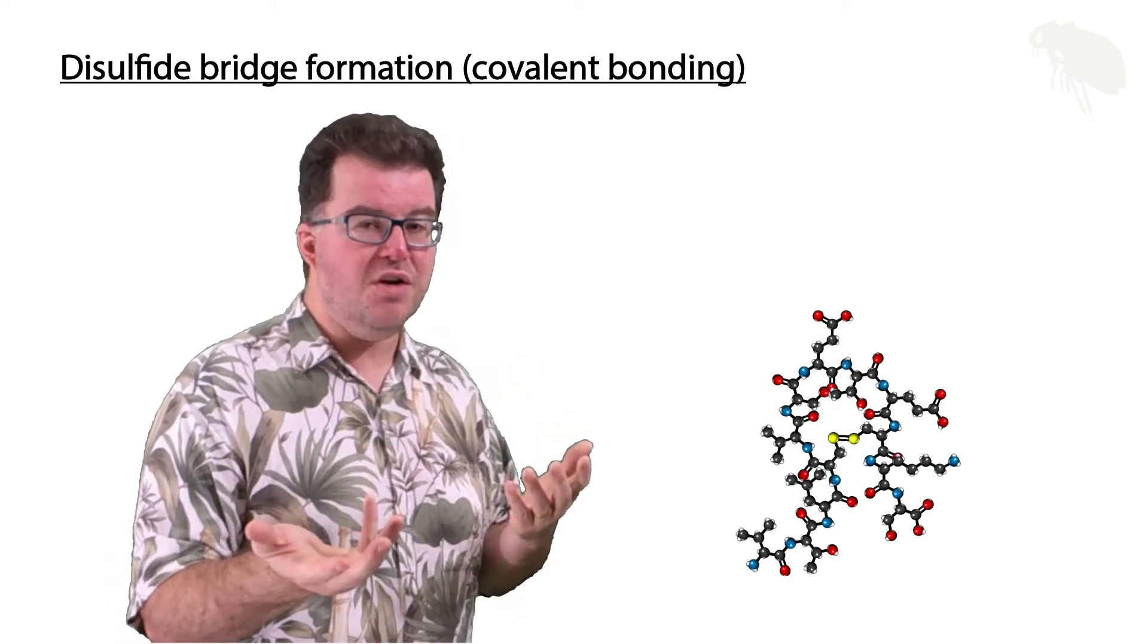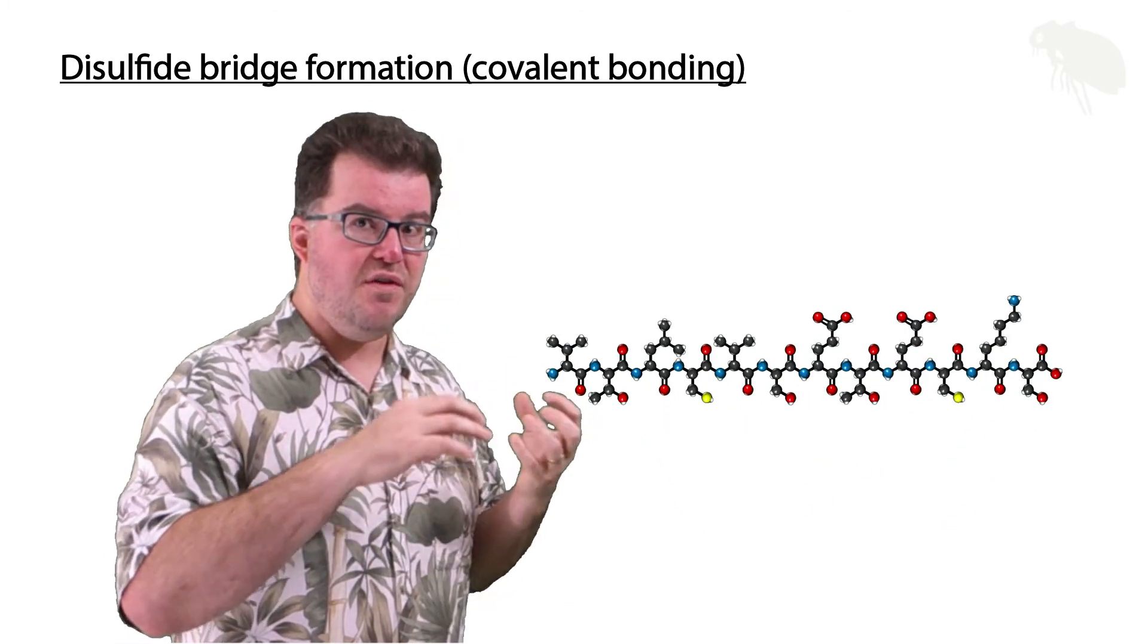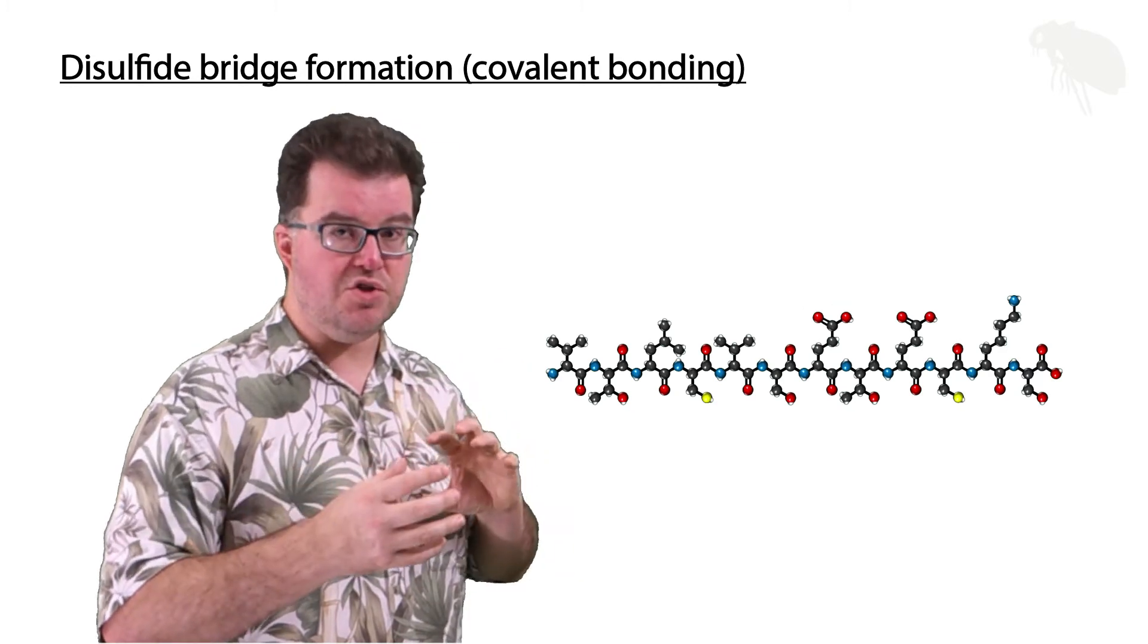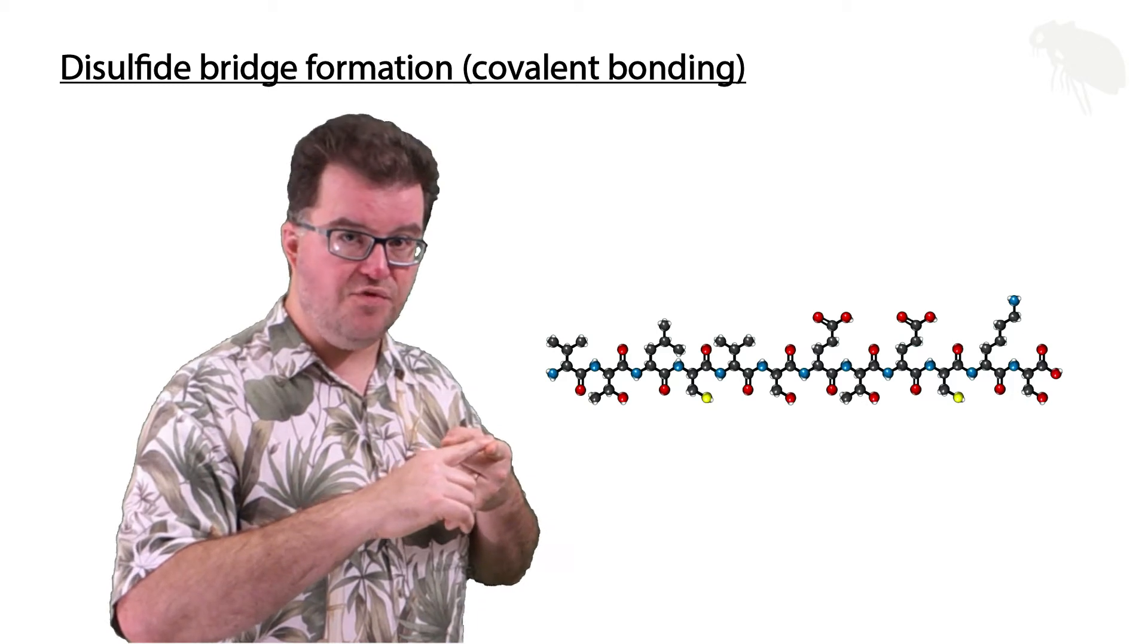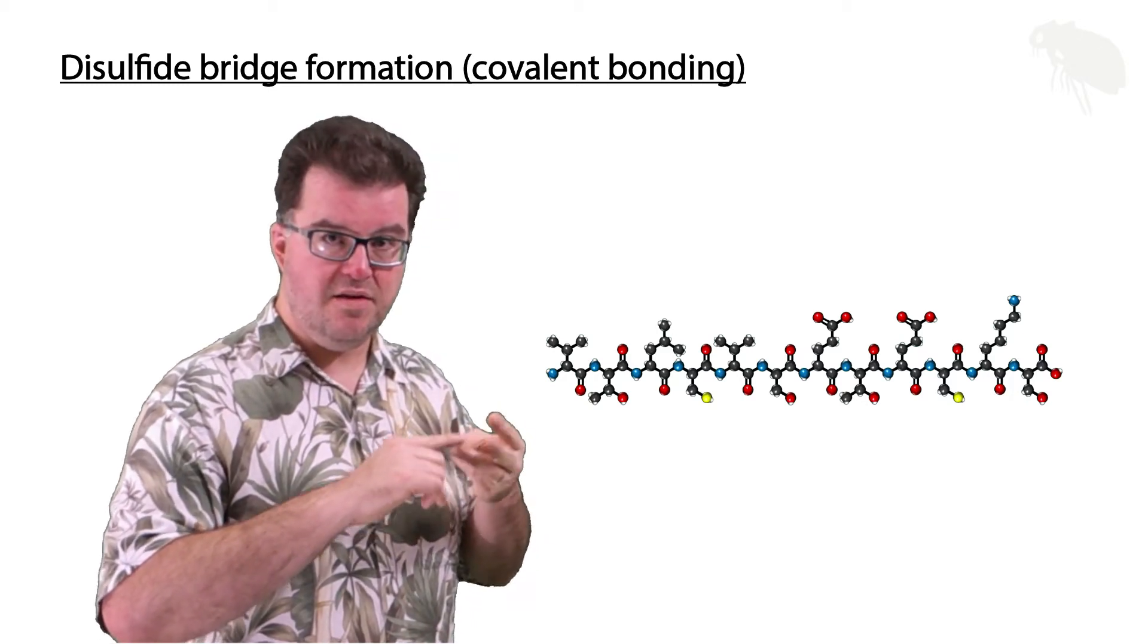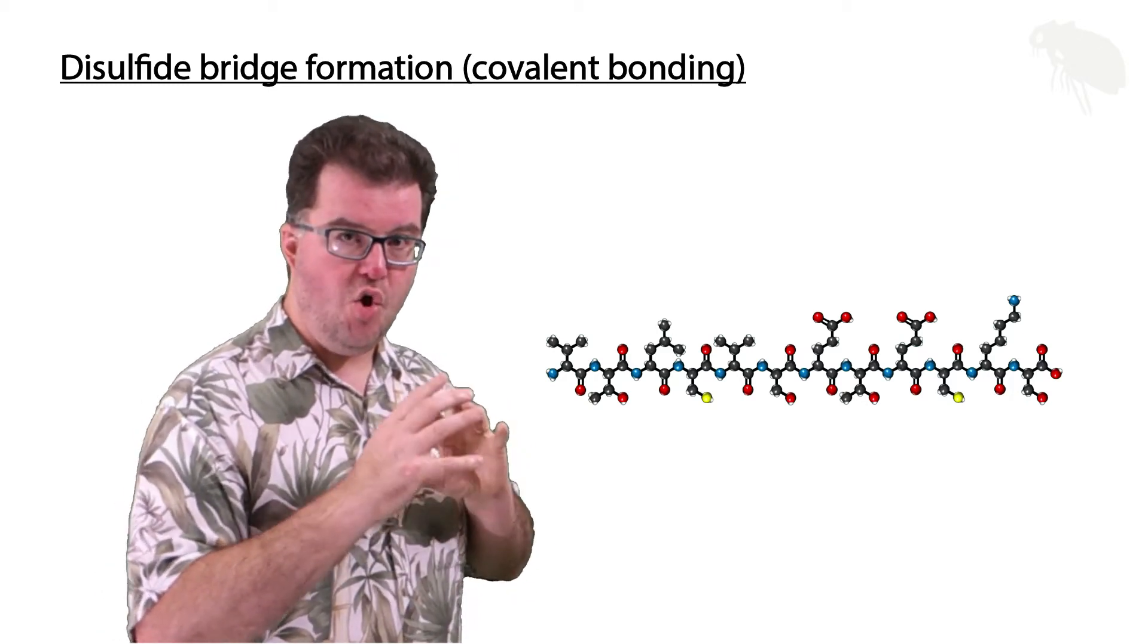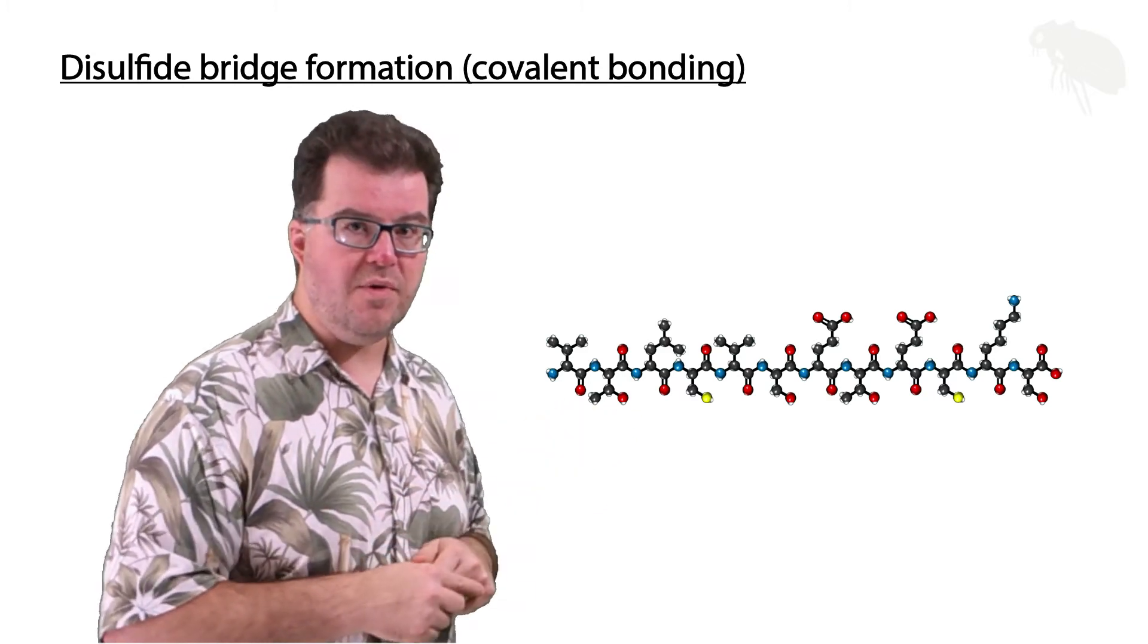The tertiary structure is going to involve folding of the secondary structure that involves three different types of forces: hydrogen bond based forces, ionic bonds, and covalent bonds, all of them working around those side chains.